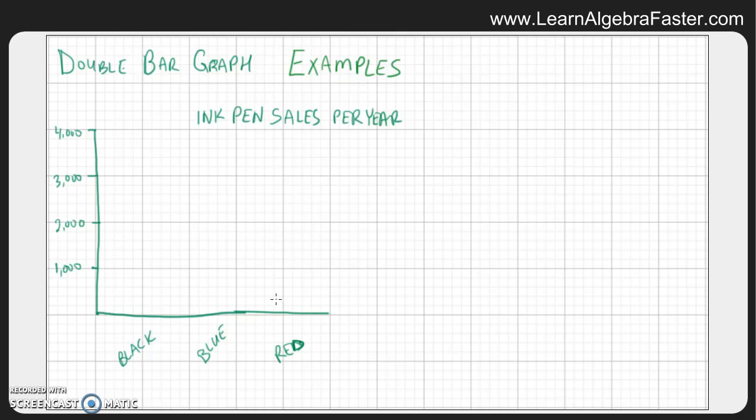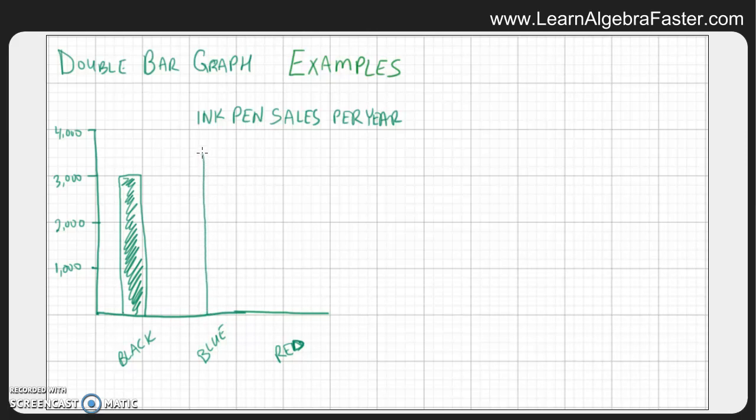Now, to make this a double bar graph, we're not just going to measure the black ink pens only one time. We're making this data up, but we'll say that the black ink pens sold 3000, the blue ink pens sold about 3500, and we'll color that in. And let's say the red ink pens sold 1000. But this is still just a bar graph. It's not a double bar graph.